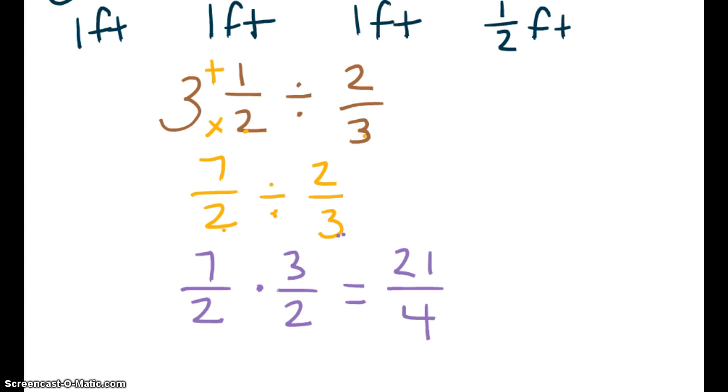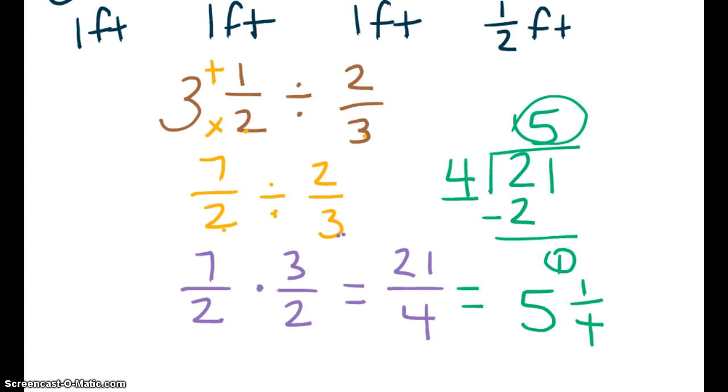So now we take 21, we divide it by 4, and we see that we get 5, this is our whole number 5, and 1 out of 4 remaining. So 5 whole pieces and a fourth of a board.